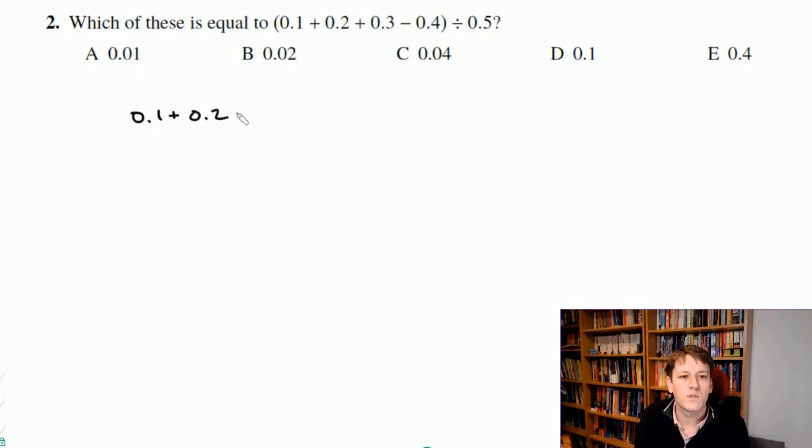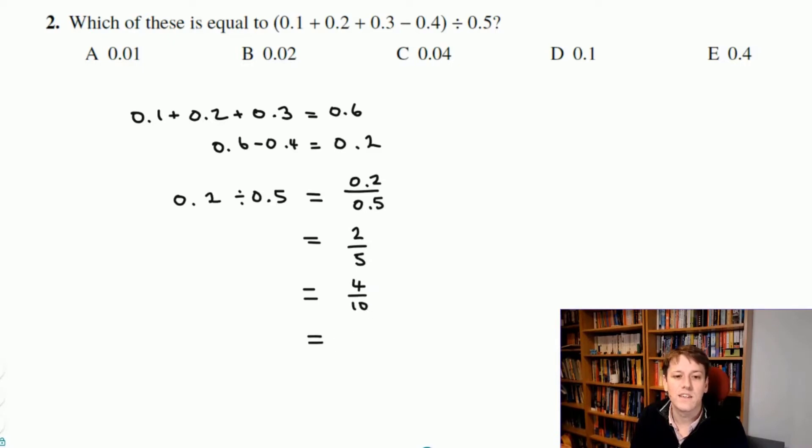0.1 plus 0.2 plus 0.3 gives me 0.6. Then if I do 0.6 minus 0.4 that gives me 0.2. So that's everything in the brackets. We just have to work out what 0.2 divided by 0.5 is. A division is always the same as a fraction, so 0.2 divided by 0.5 is 0.2 over 0.5 like this. I could times top and bottom by 10 and get 2 fifths, and 2 fifths is equal to 0.4. The division sign is a fraction, right? It's a division with something on top and something on the bottom.